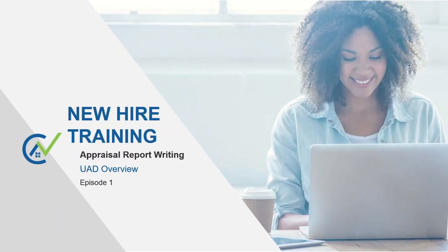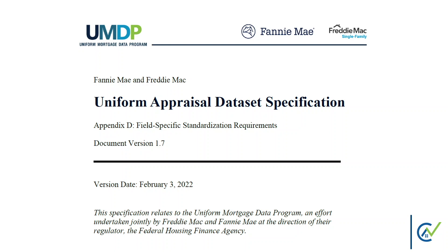The first section of this module will provide an overview of the Uniform Appraisal Dataset, also known as UAD. To improve the quality and consistency of the appraisal data for loans delivered to the GSEs — also known as Fannie Mae and Freddie Mac — the Uniform Appraisal Dataset was developed. It defines all fields required for an appraisal submission for specific appraisal forms and standardizes the definitions and responses for a key subset of those fields. The UAD was created to allow for consistency in reporting data in appraisal reports.